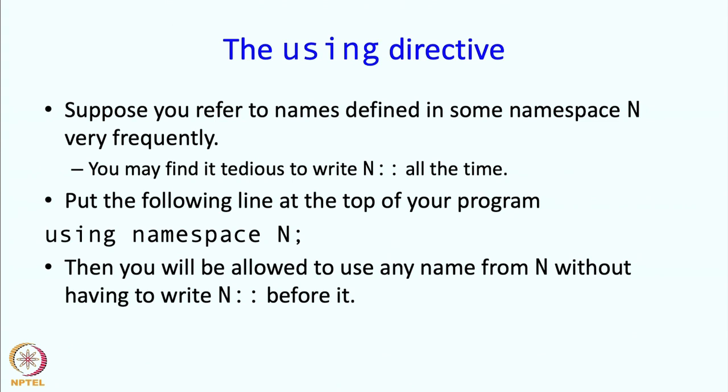So subsequently or for all other references in that file, you will be allowed to use any name from N without having to write N colon colon before it. So N colon colon will become implicit.